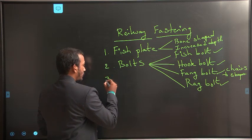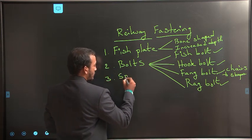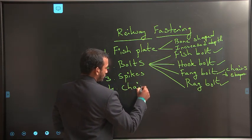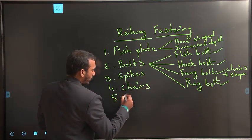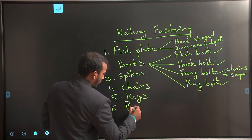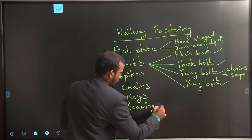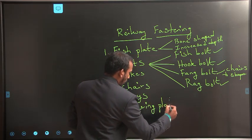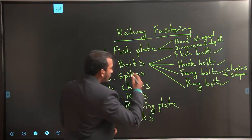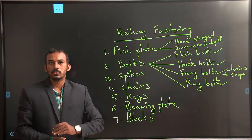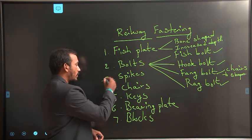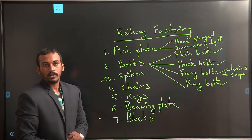Coming to the next fastening, that is spikes. And the next one is chairs. Fifth one, keys. Sixth one, bearing plate. And the last one is blocks. These are the seven types of fastenings used to connect various components of a permanent way. So let's start with the spikes, because fish plates and bolts are already completed in our last class.